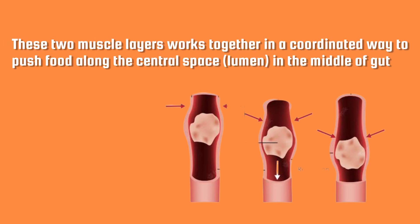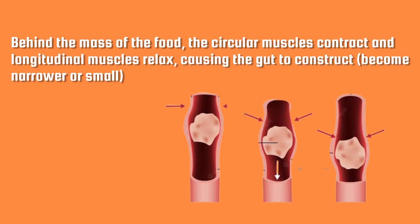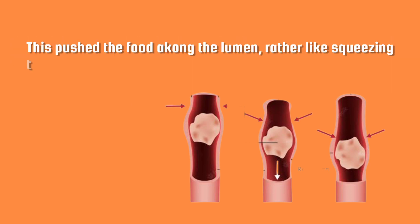These two muscle layers work together in a coordinated way to push food along the central space in the middle of the gut. Behind the mass of food, the circular muscles contract and the longitudinal muscles relax, causing the gut to constrict — become narrower. This pushes the food along the lumen, rather like squeezing toothpaste out of a tube.